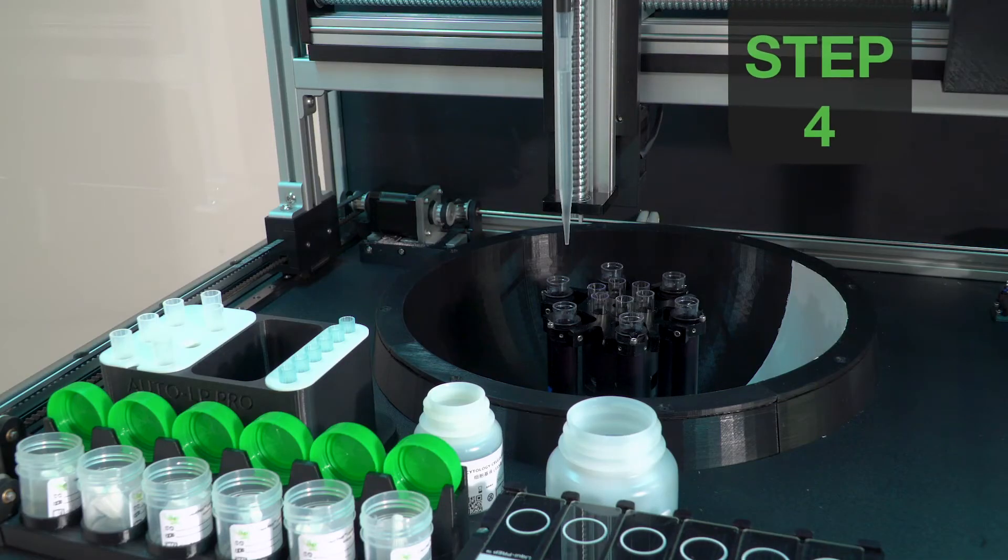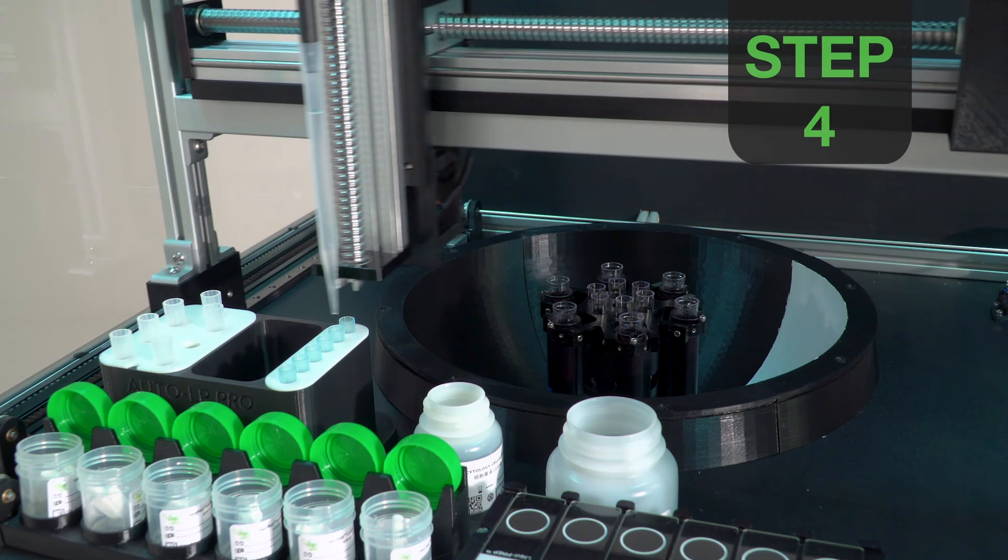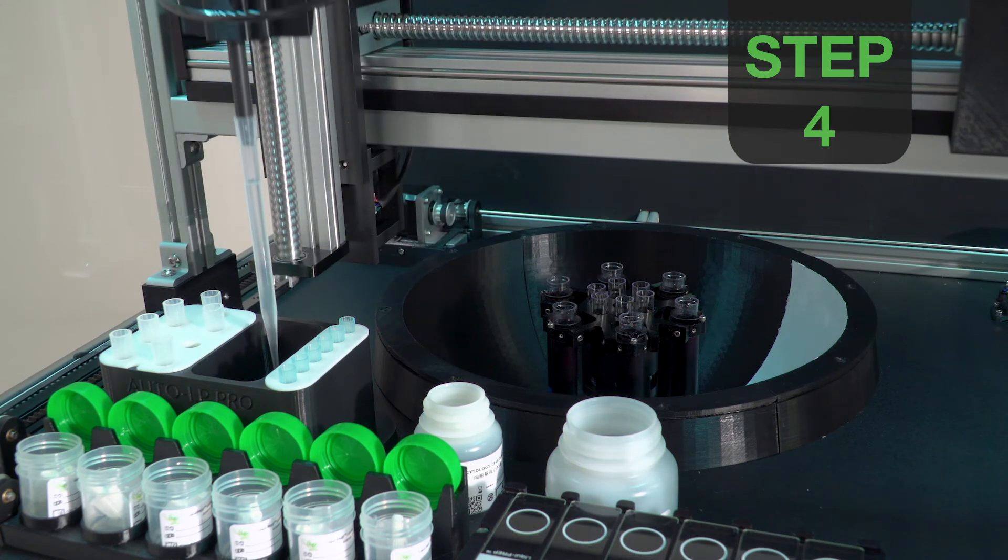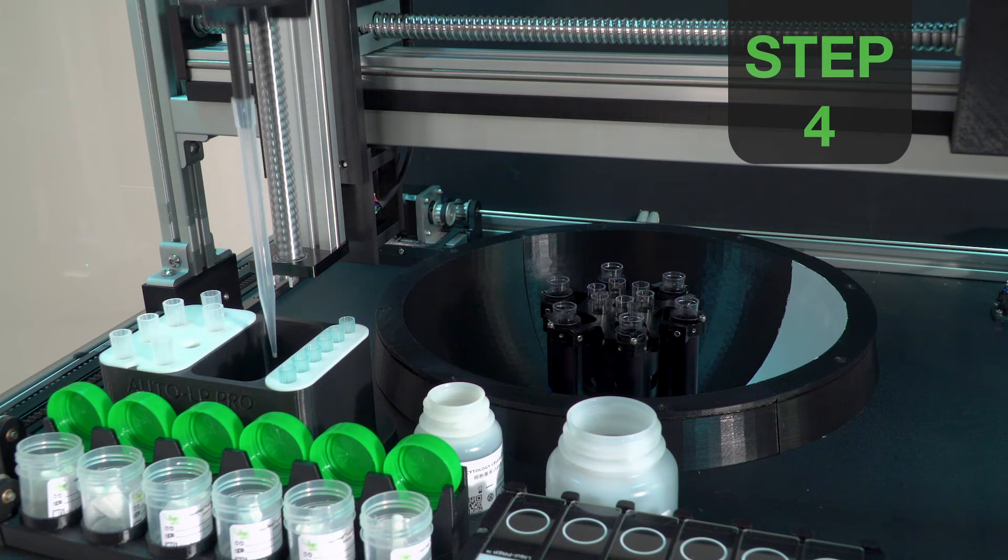Using the corresponding 5 milliliter pipette tip for each specific specimen, approximately 4.5 milliliters of diluent is removed from each centrifuge tube.